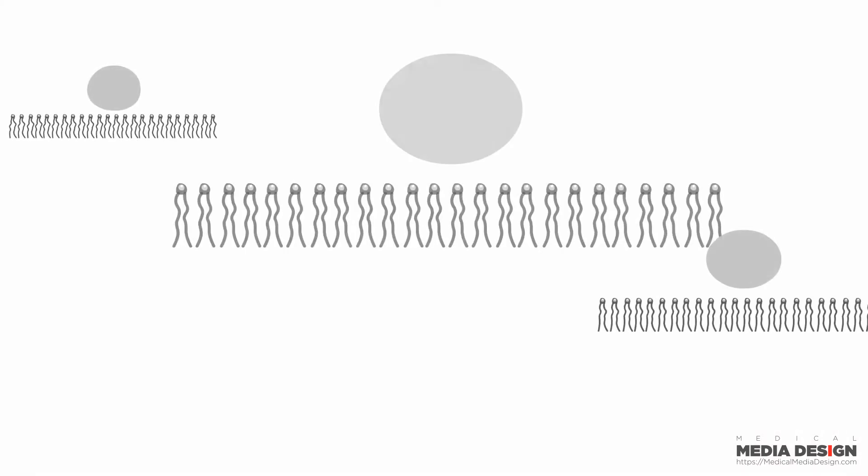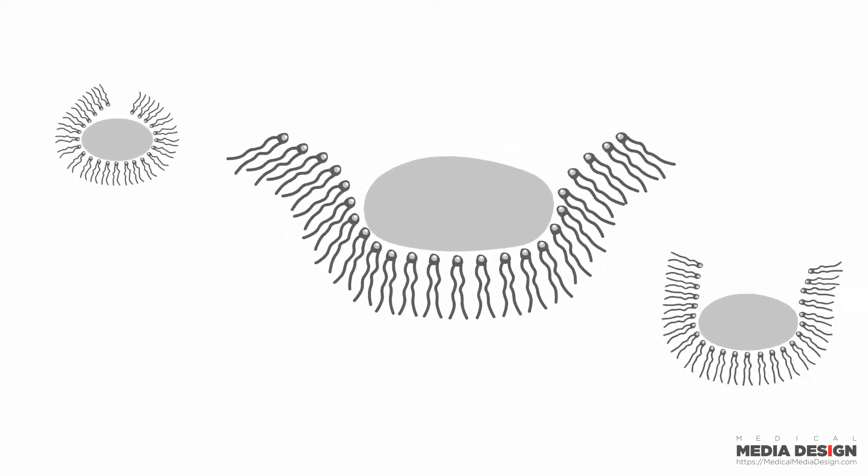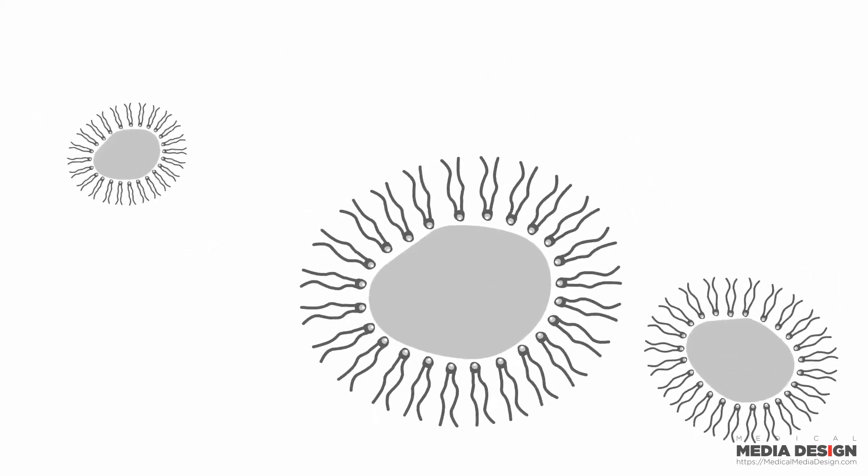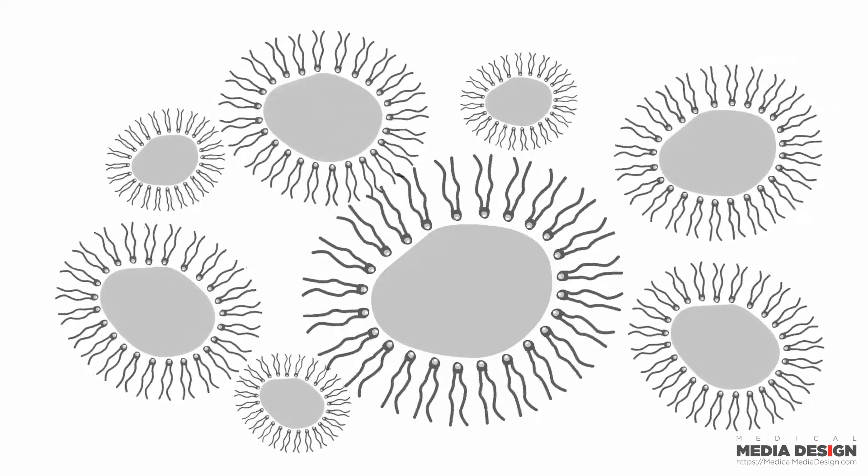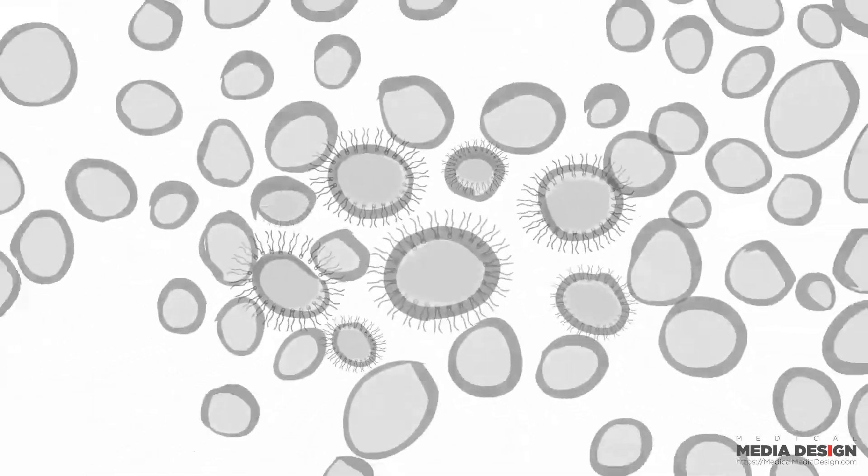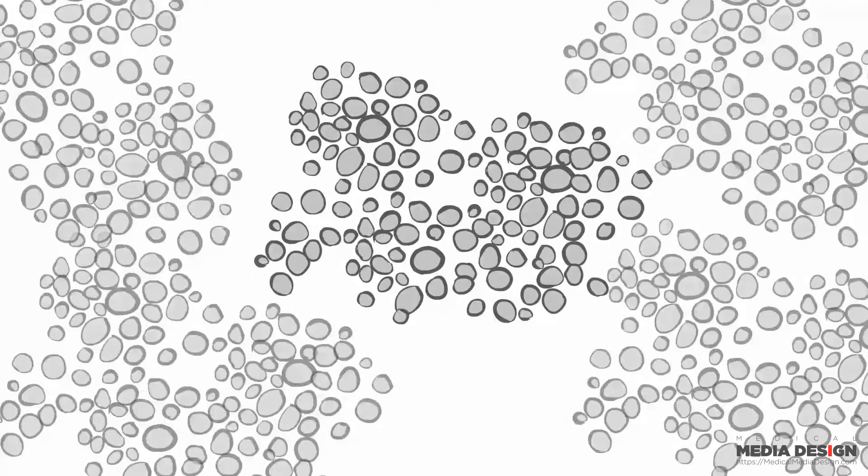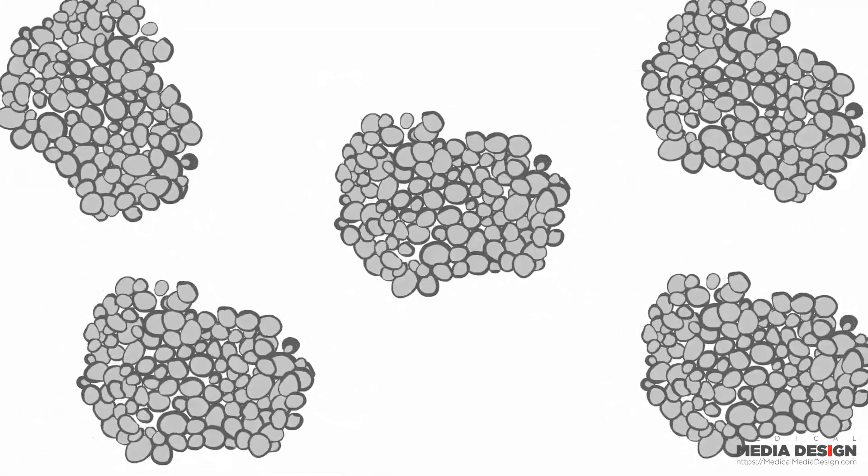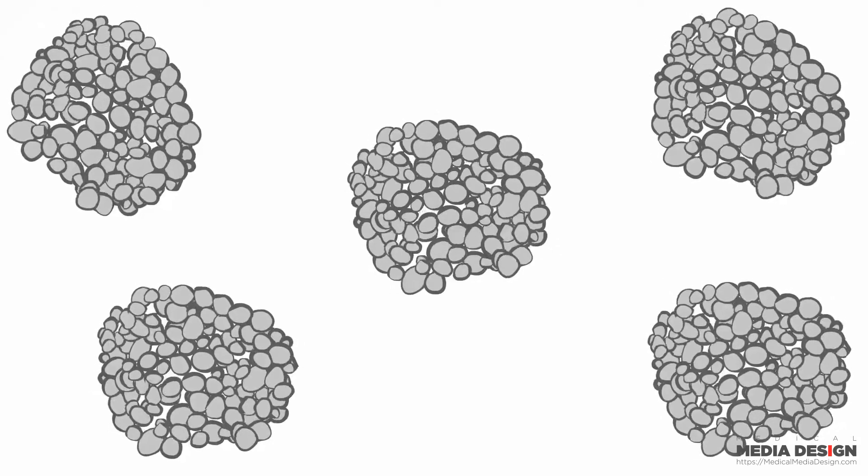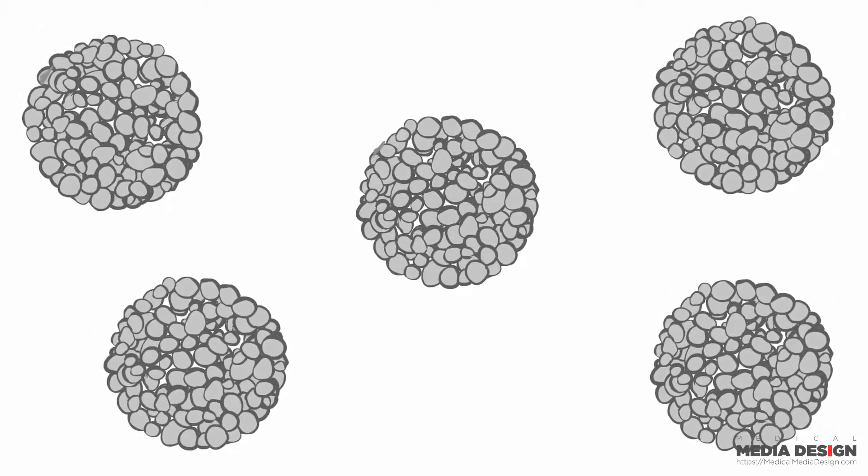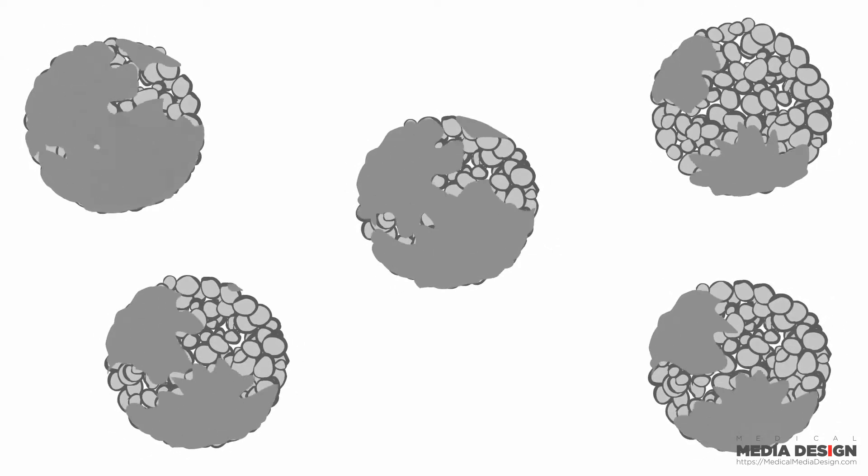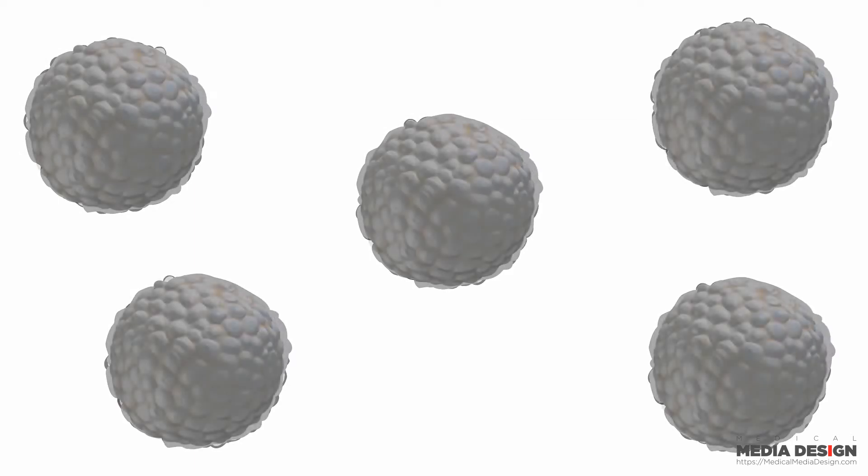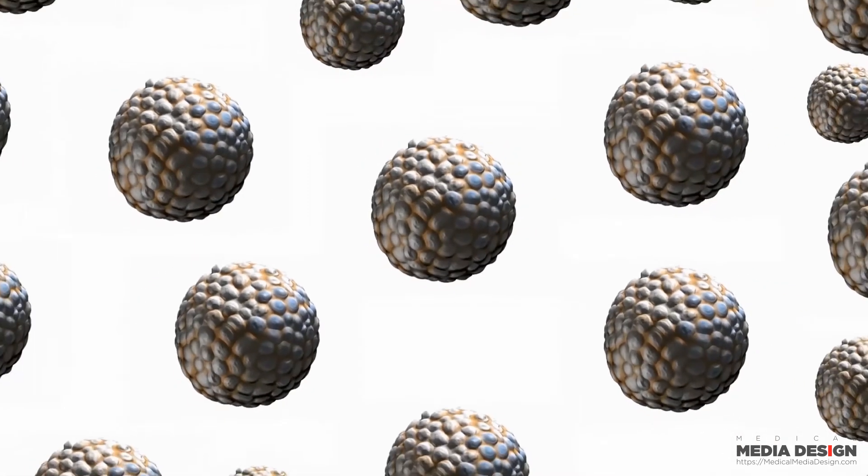Multivesicular liposomes are manufactured using a double emulsion process. In the first emulsification step, aqueous droplets containing bupivacaine are surrounded by lipid monolayer. In the second emulsification step, the bupivacaine containing liposomes are encapsulated within a second lipid monolayer, thus forming multi-chambered particles called multivesicular liposomes.